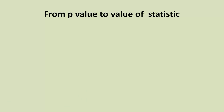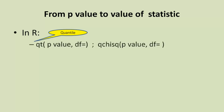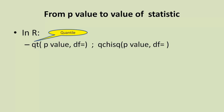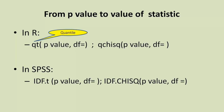We can also go in the other direction — from a p-value to a statistic value. In R, we use the quantile function (q prefix): input a p-value and get back a t-value or chi-square value. In SPSS, the equivalent function is IDF (inverse density function) — IDF.T for the t-value and IDF.CHISQ for the chi-square value.